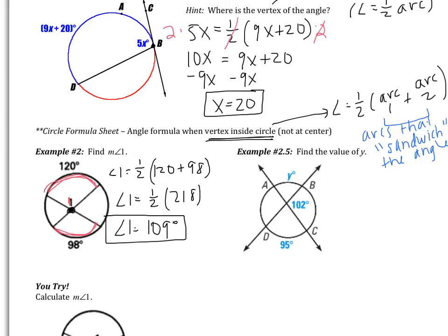In example 2.5, we again have an angle and two arcs. The angle equals one half the sum of the two arcs that sandwich it. Looking at angle 102, the two arcs that sandwich it are arc BC and AD. I know the angle but not either arc. However, since 102 and the adjacent angle form a straight line, they're supplementary. So 180 minus 102 gives me the red angle of 78.